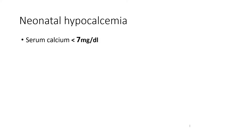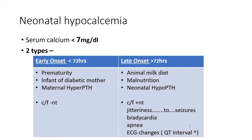Neonatal hypocalcemia is defined as total serum calcium less than 7 mg/dL. There are two types: early onset, occurring within 72 hours of birth, and late onset, occurring after 72 hours.